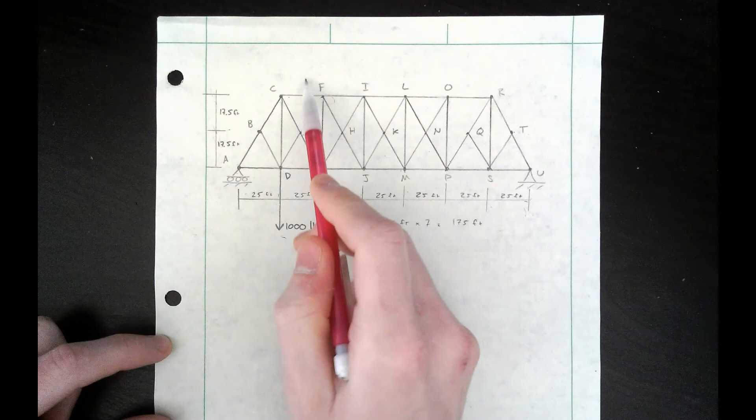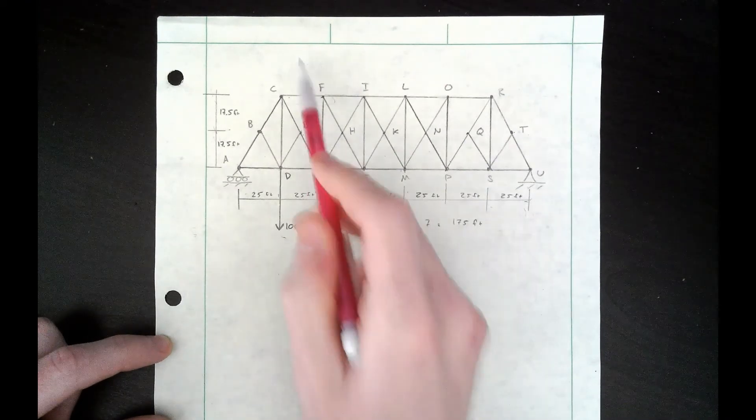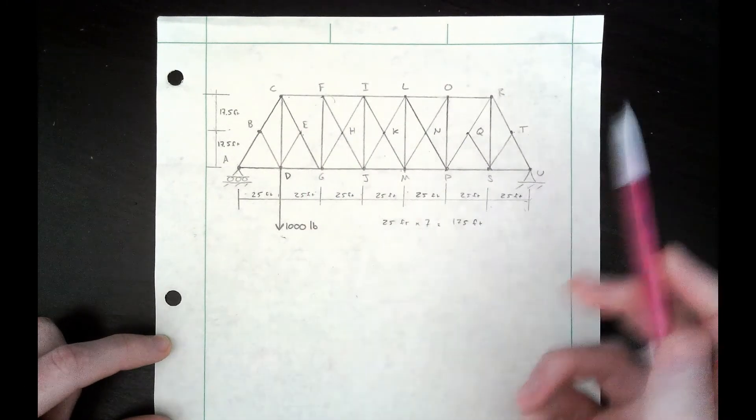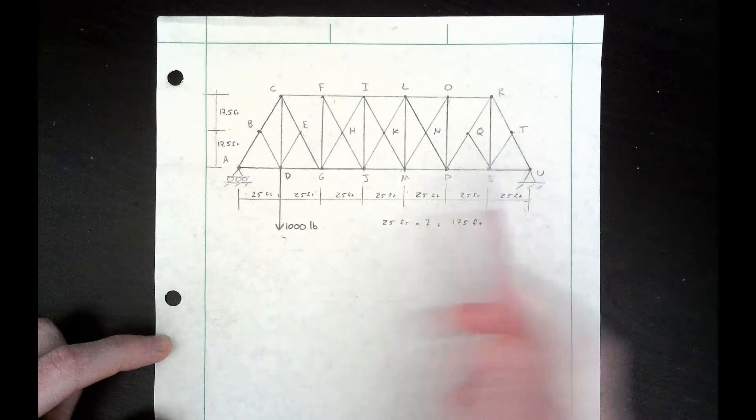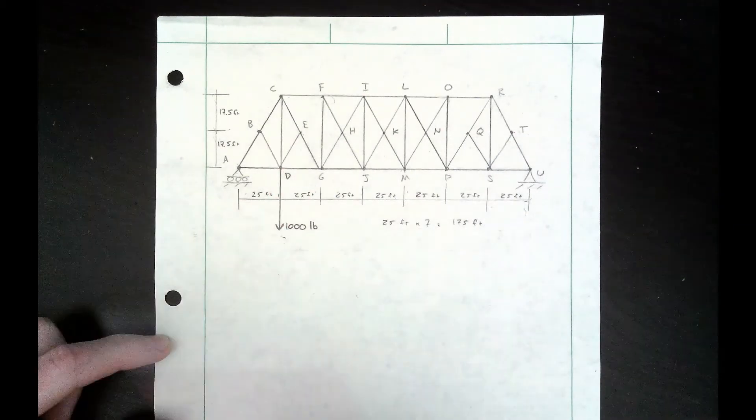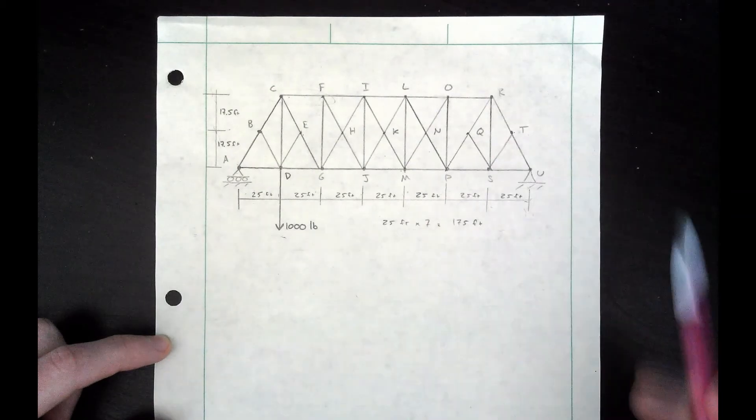I would again recommend using the method of sections so you can cut through the bridge right here, and you would be able to find through equilibrium what the force in CF is going to be directly after you've found the reactions.